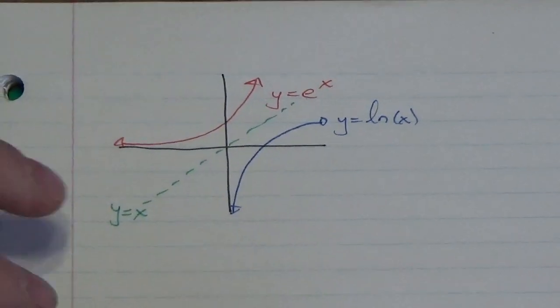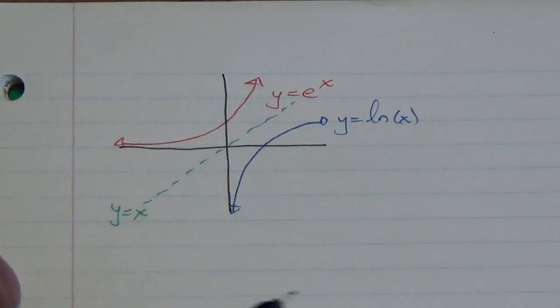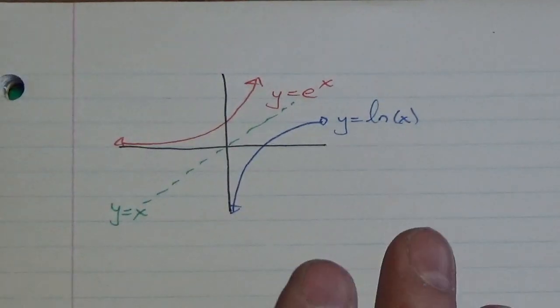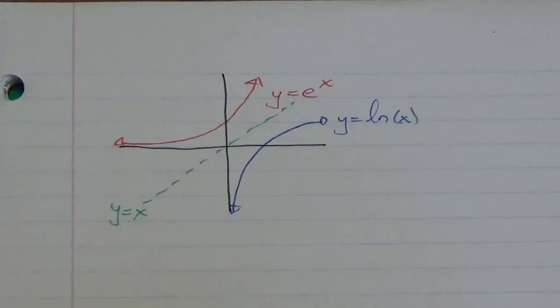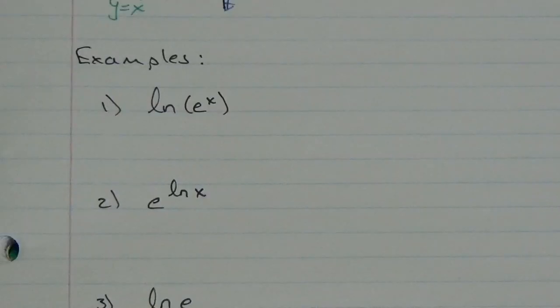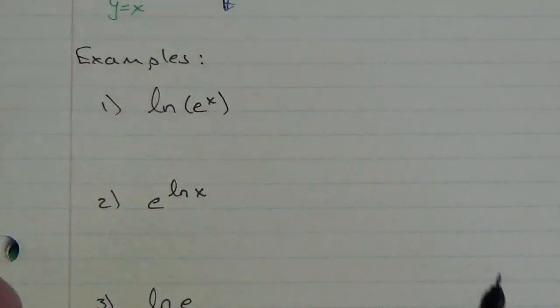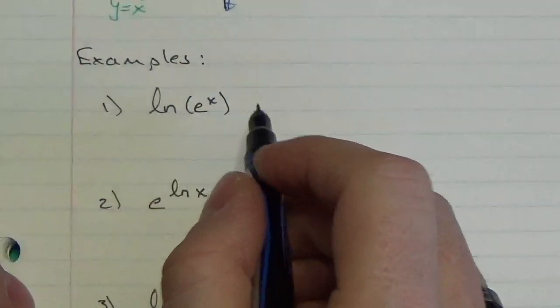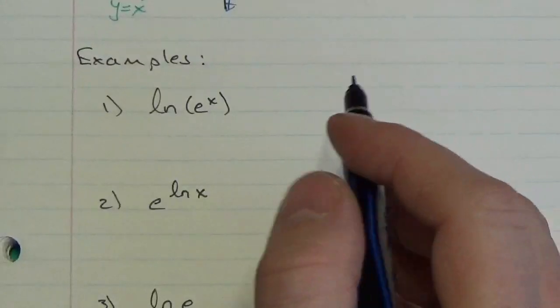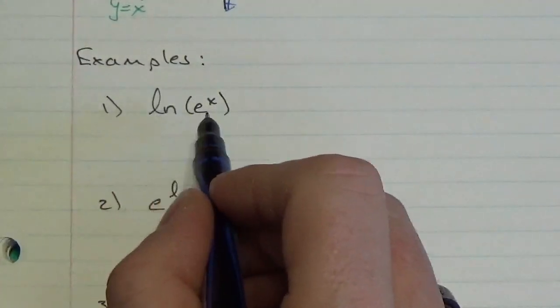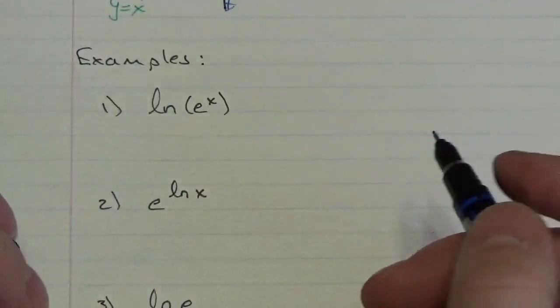First, I want to go through some properties of the natural logarithm, really just to emphasize that it's just a logarithm. Let's evaluate a bunch of these things here, just to figure out what they simplify down to.